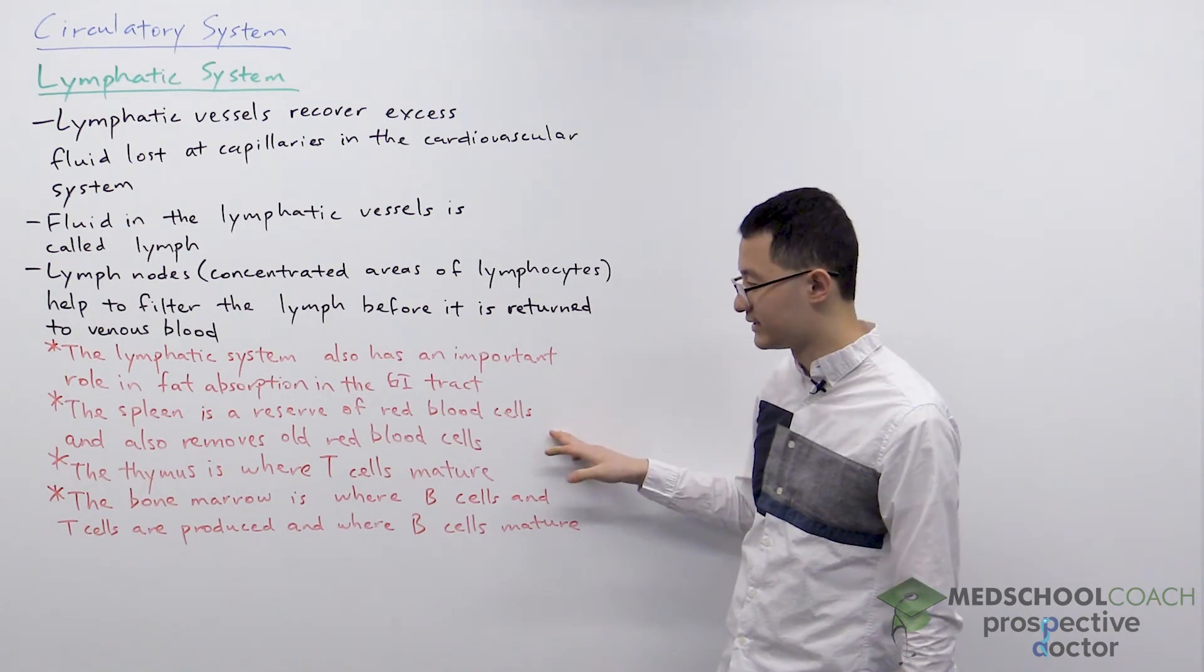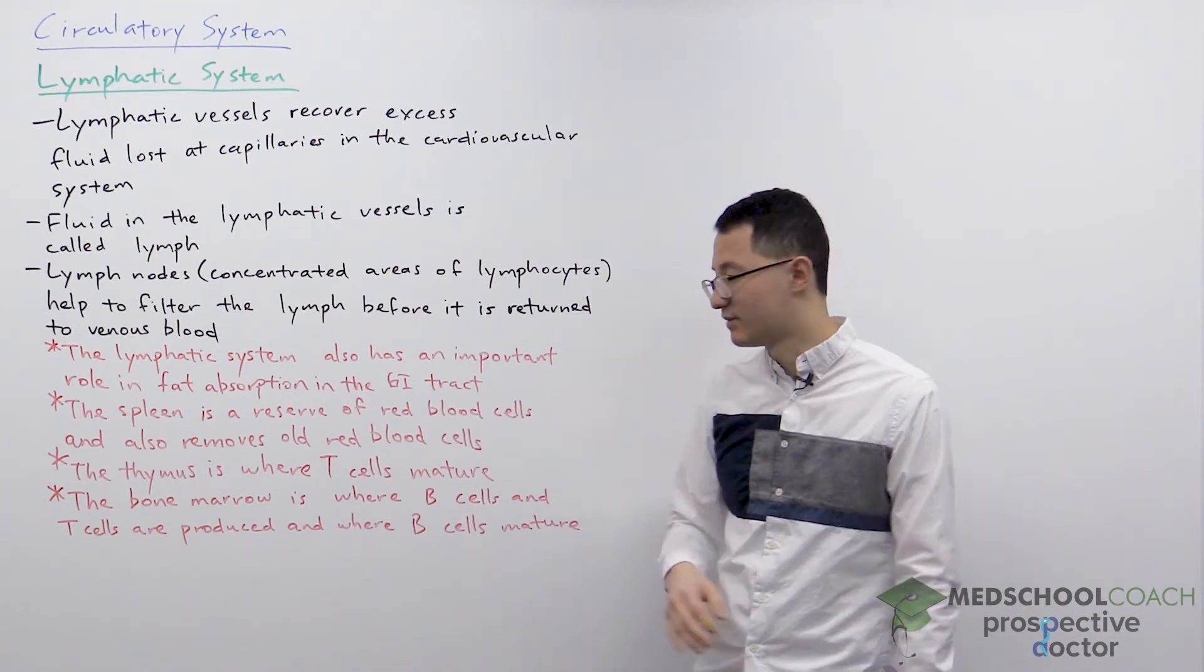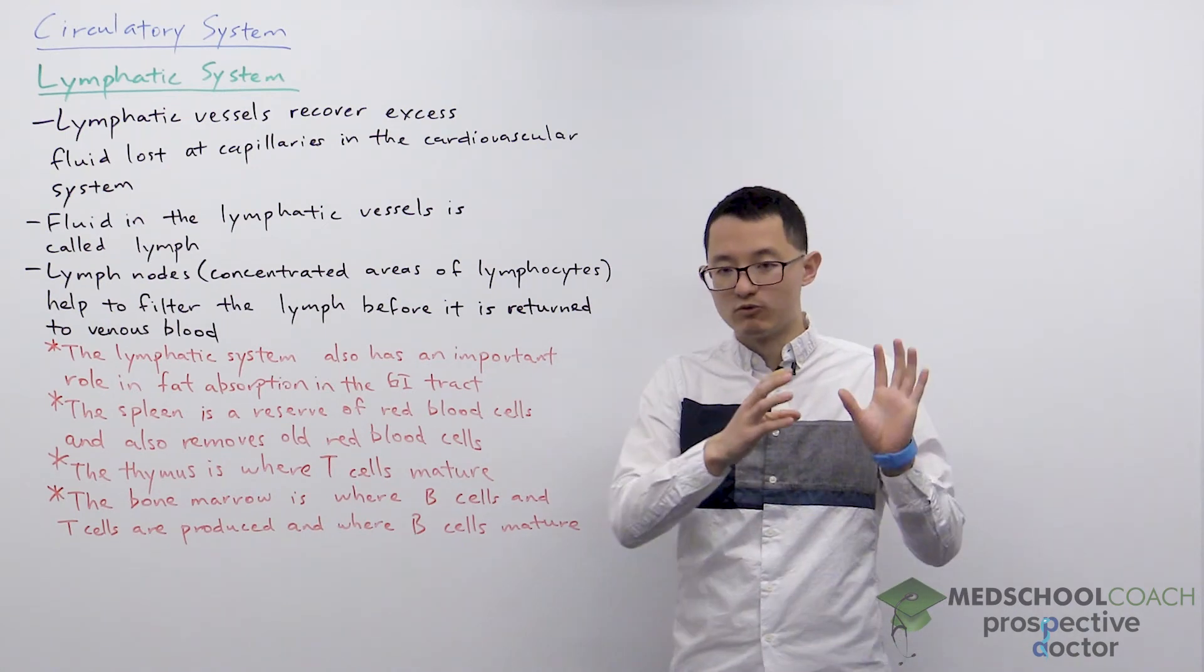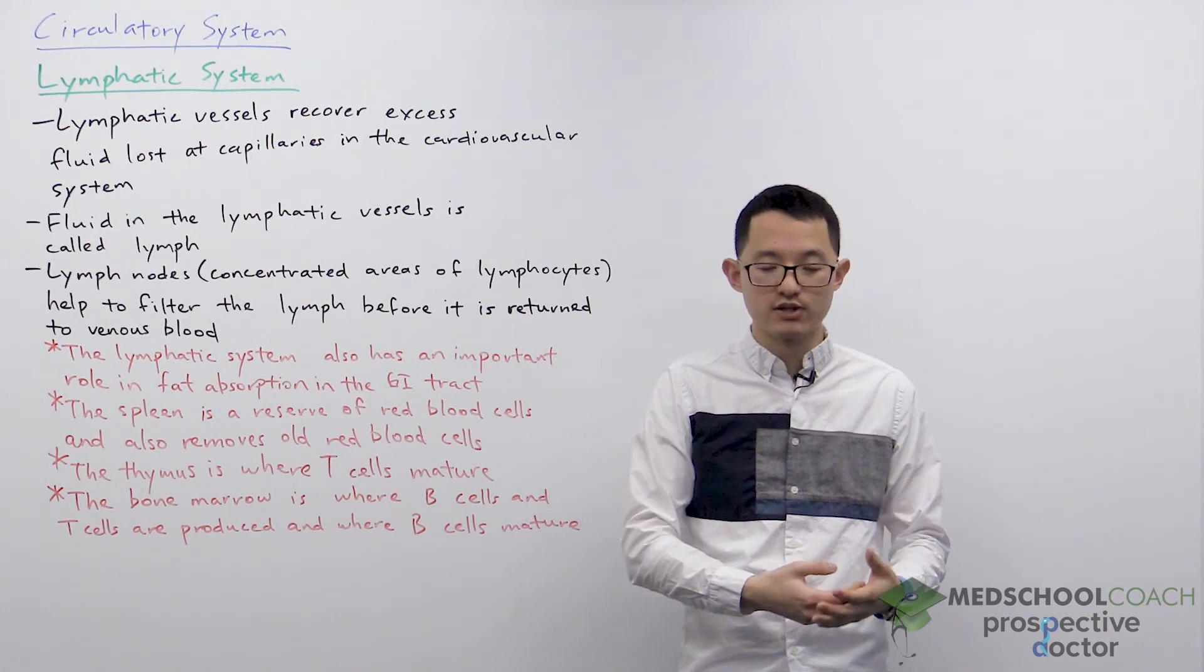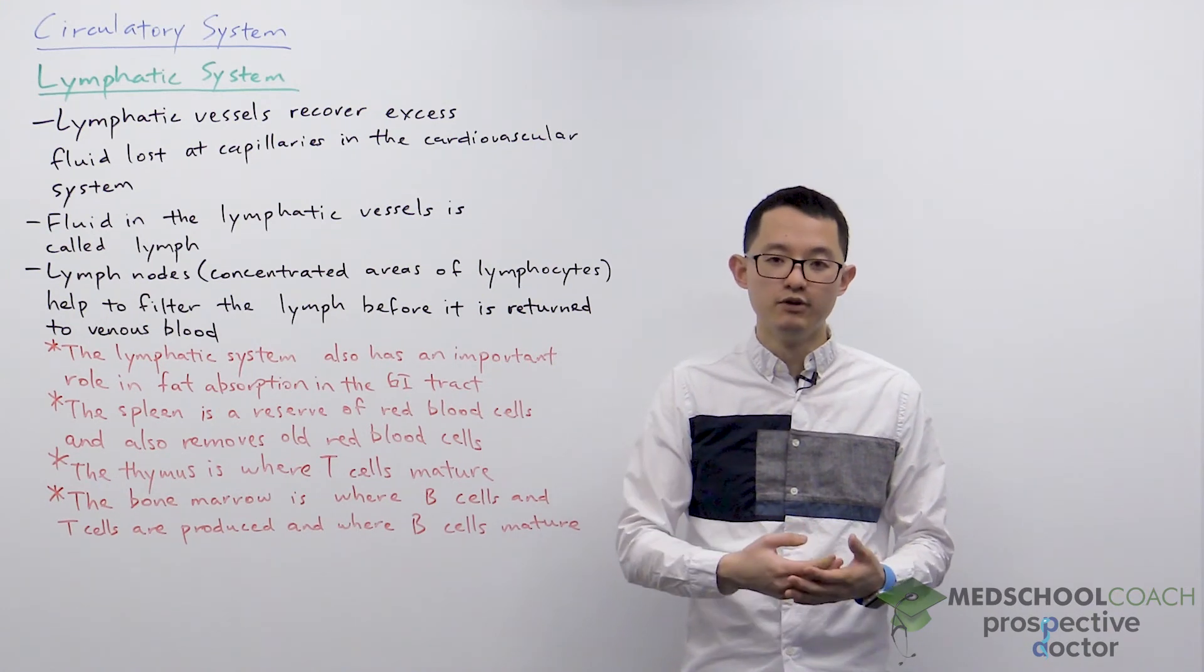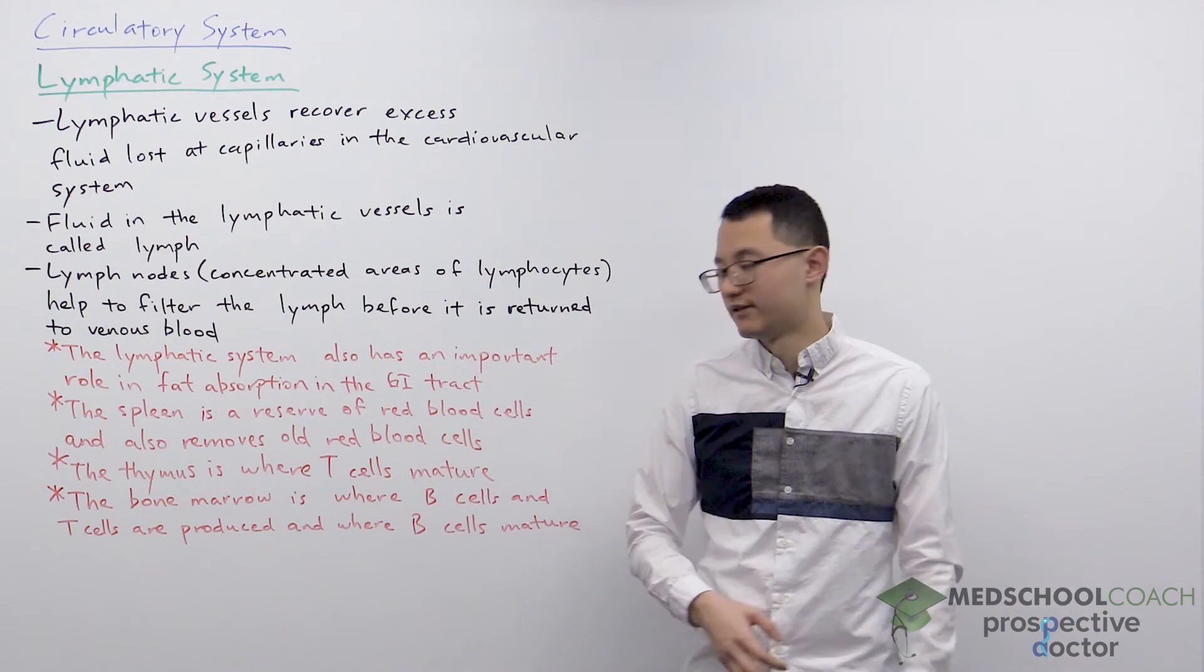For the other organs in the lymphatic system we have the spleen. The spleen is this red organ that is essentially a reserve of red blood cells and also plays a role in removing old red blood cells from the body.